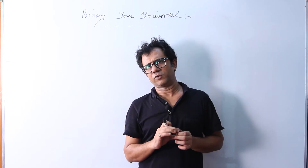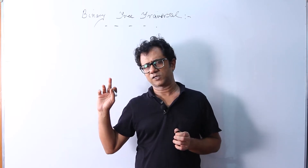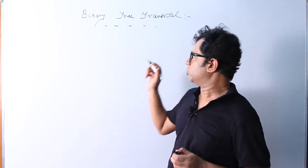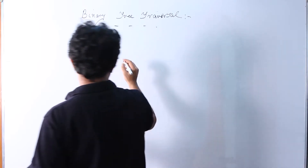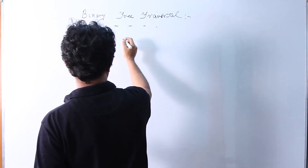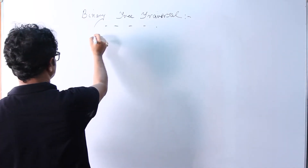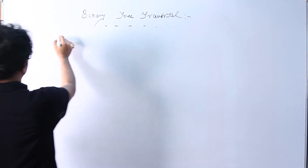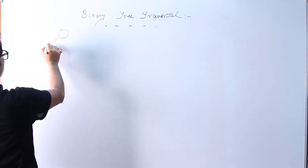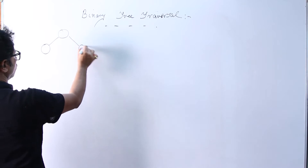This binary tree traversal technique will now be explained on the board. Let me just draw a binary tree of my choice. Suppose the tree is like this — I am writing the tree over here, suppose there are nodes like this.